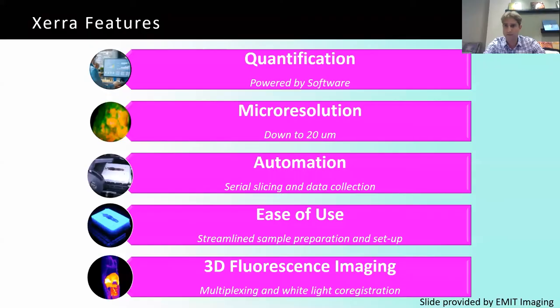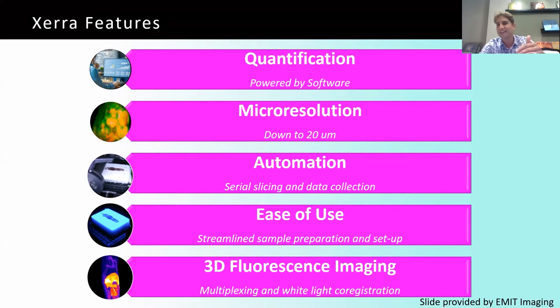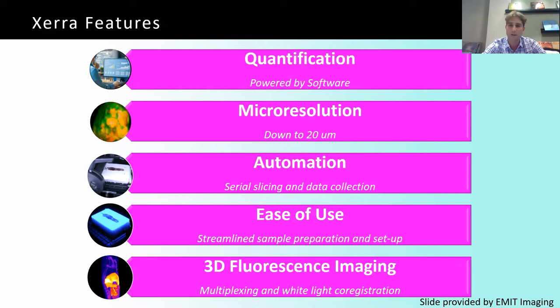XERA has several features. There's quantification — the ability to measure quantity, mean versus intensity, and provide comparative analysis. We are able to get down to micro-resolution, down to 20-micron voxel size. The system is automated — the serial sectioning and image acquisition are completely automated. It's easy to use in terms of sample preparation and system setup. And we are able to do imaging in 3D, which is a great feature and a great advantage.